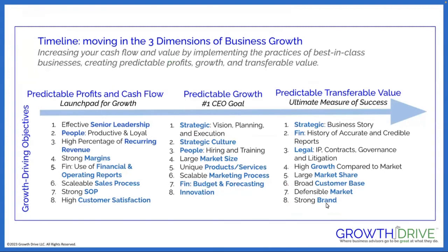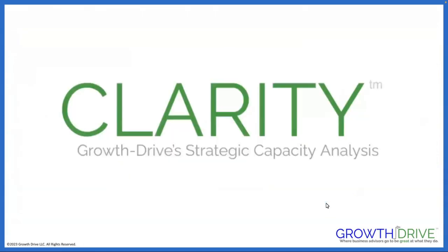We then move into predictable growth. But remember, when you create strategic capacity — high strategic capacity in the first dimension — you will start to unlock growth. It happens almost automatically. Then we can move purposefully into growth and invest time and treasure on that dimension. And that is what most CEOs get out of bed wanting to do in the morning.